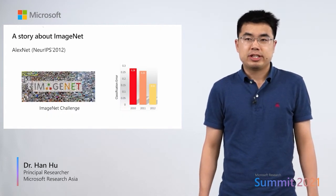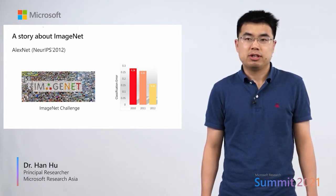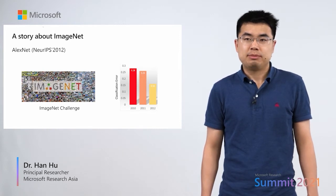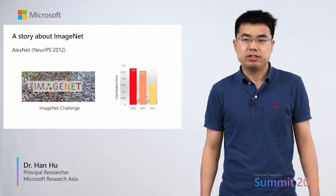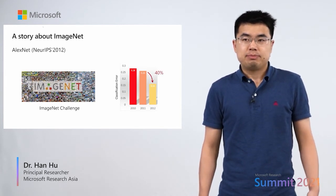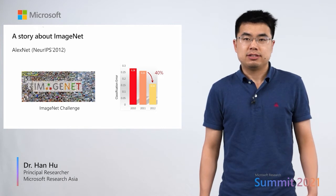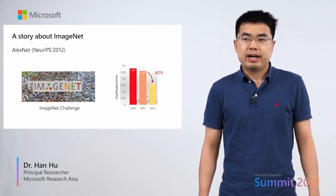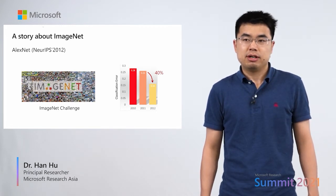Let me begin with a story about ImageNet. ImageNet's challenge has played an important role in triggering the deep learning era in computer vision. In 2012, a deep learning work named AlexNet won the championship of that year's challenge, with the error rate reduced by an amazing 40% compared to the last year's champion entry. This is a milestone moment indicating the coming of a new deep learning era for computer vision.